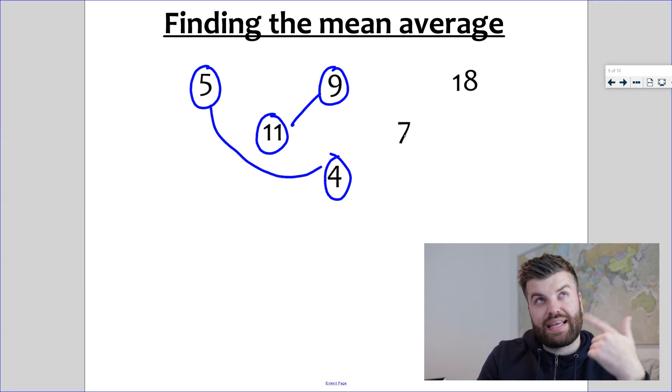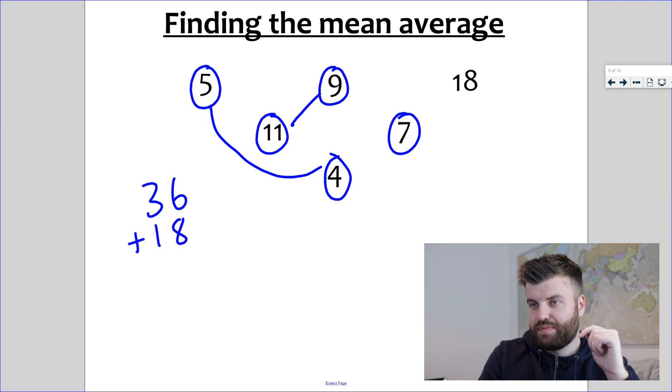And then finally plus 18. I'm not going to do that one in my head. I'm going to make sure 36 plus 18, let's use the column method. 6 plus 8 is 14, 3 plus 1 plus 1, 10, that's 5 tens in total. Aha, I have the answer: 54.